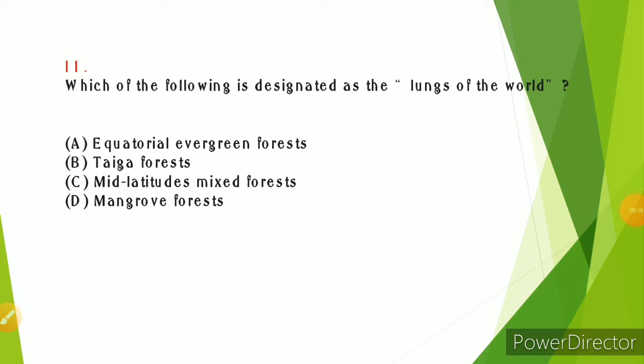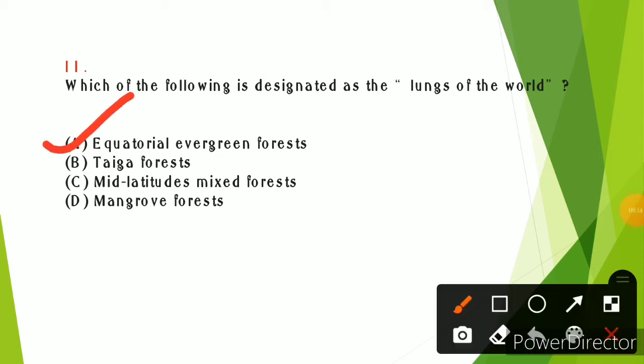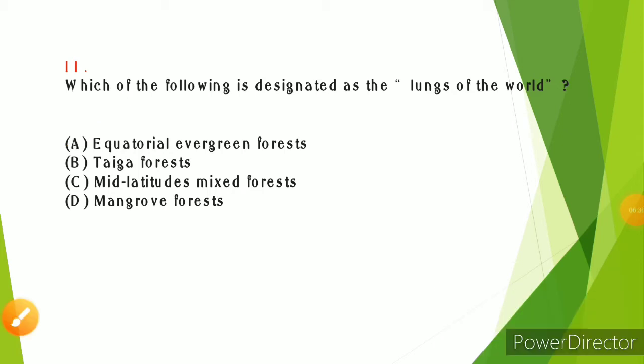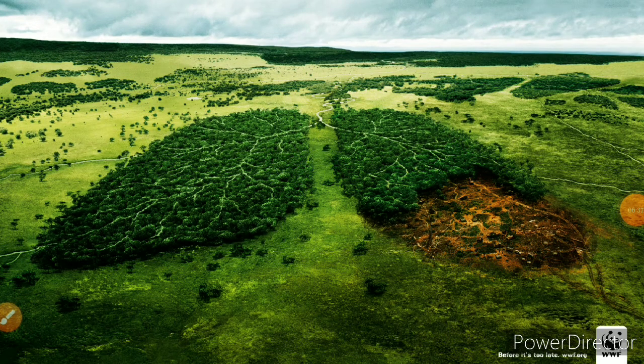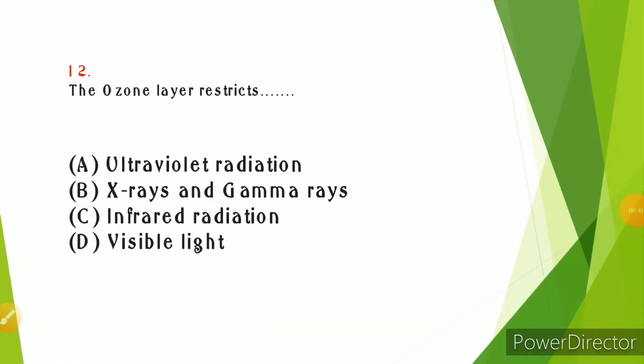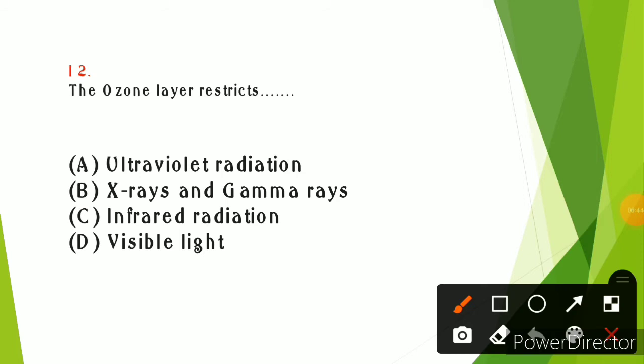Which of the following is designated as the lungs of the world? The answer is tropical evergreen forest or equatorial evergreen forest. For example, Amazon rainforest, which utilizes maximum carbon dioxide and produces maximum oxygen in the atmosphere. This is the lungs of the world.